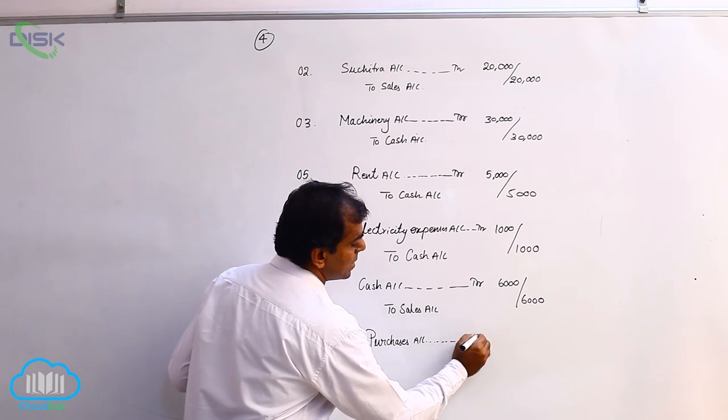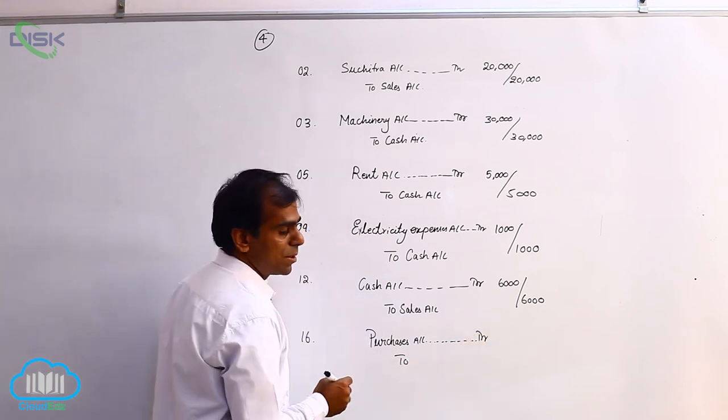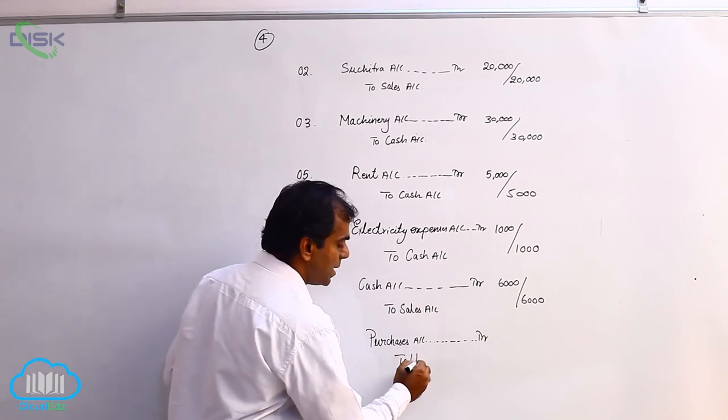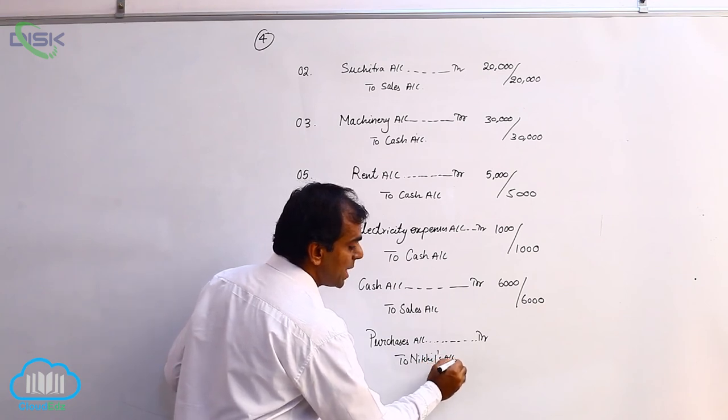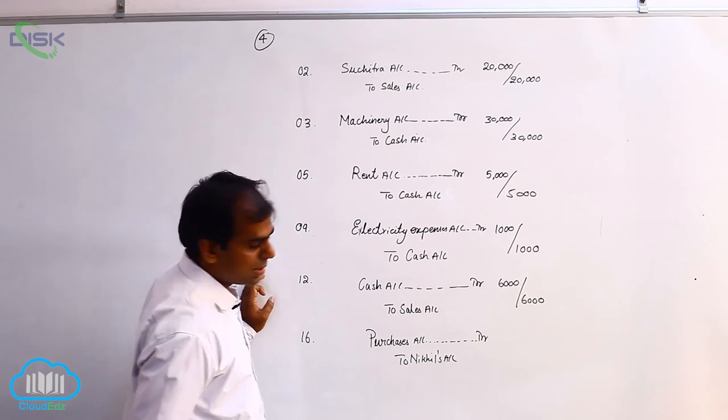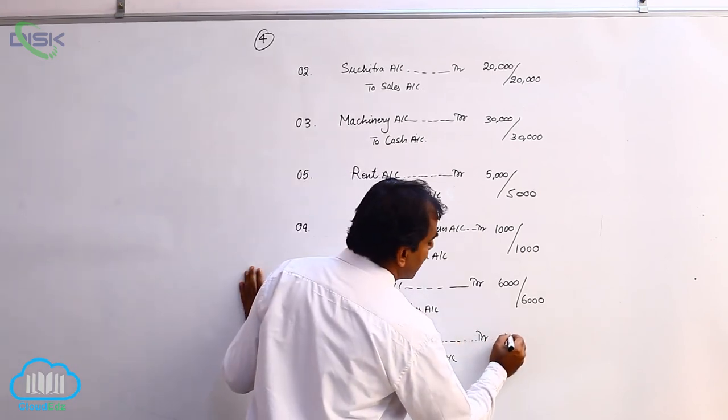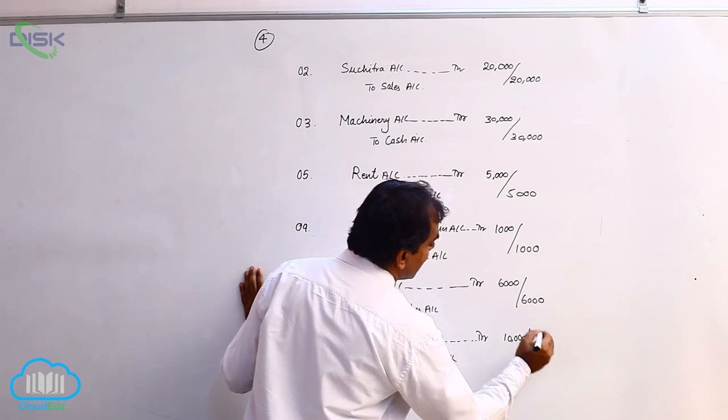So, purchases account debit. Now, who is Nickel? Nickel is the giver of the goods. Applying the rule of personal account, we credit Nickel's account. So, journal entry becoming purchases account debit to Nickel's account, 10,000. And your narration being goods purchased on credit.